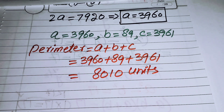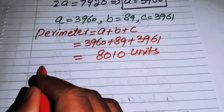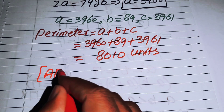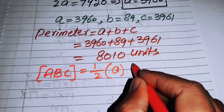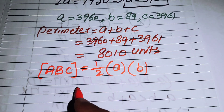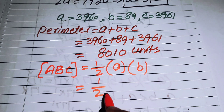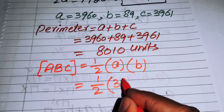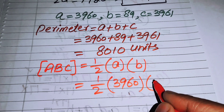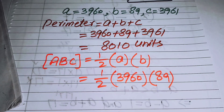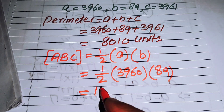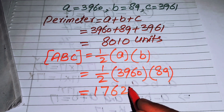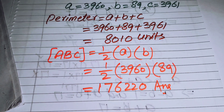To find the area, we use the formula: Area = ½ × base × altitude = ½ × a × b = ½ × 3960 × 89 = 176,220 square units. This is the final answer. Thank you for watching — please subscribe for more exciting videos.